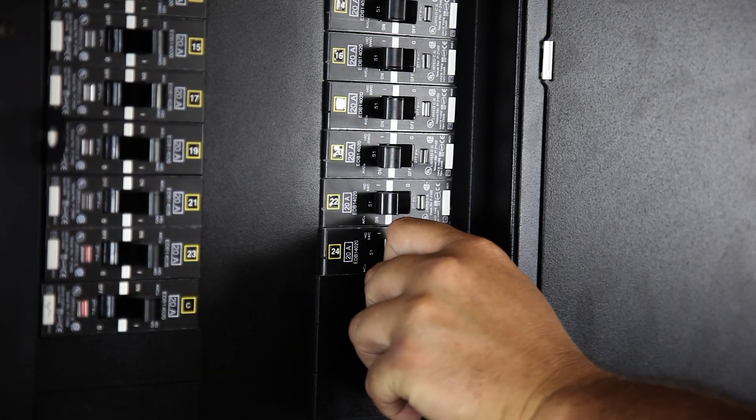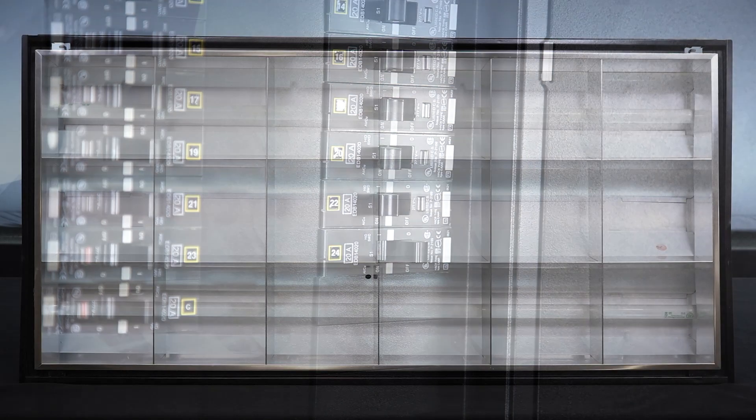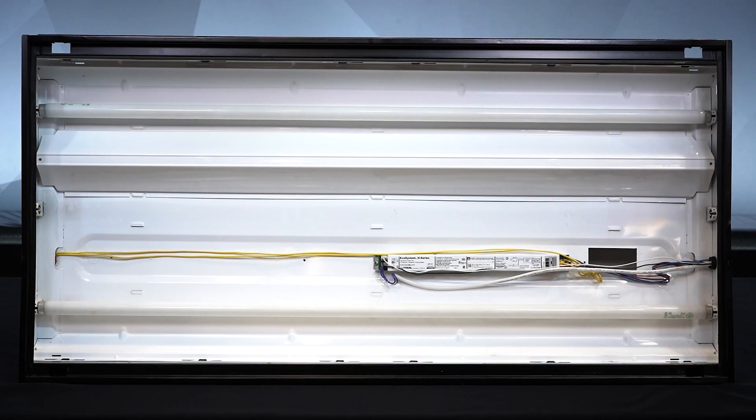Before you begin the installation, turn off power at the circuit breaker. Then, remove the fixture louver and the ballast channel cover.